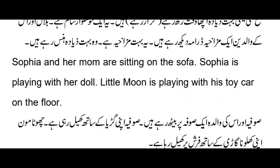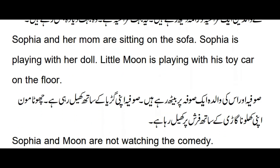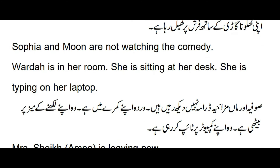Sofia and her mom are sitting on the sofa — their activity is being described in present continuous. Sofia is playing with her doll. Little Moon is playing with his toy car on the floor. Sofia and Moon are not watching the comedy. Warda is in her room; she is sitting at her desk and she is typing on her laptop.